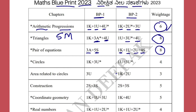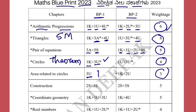For Circle, you will get a total of four marks. You will get a three-mark understanding question — that is the fixed circle theorem — and one mark in the objectives section. In Areas Related to Circle, maximum you will get three marks on understanding, specifically a question to find the area of the shaded region.